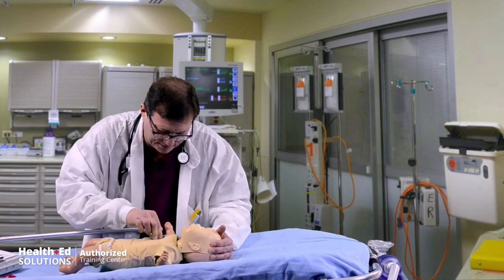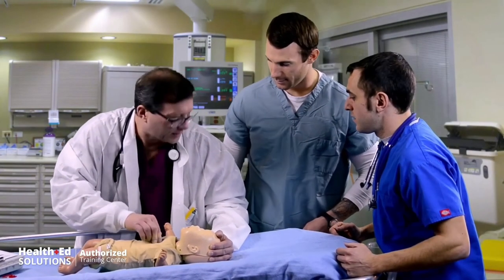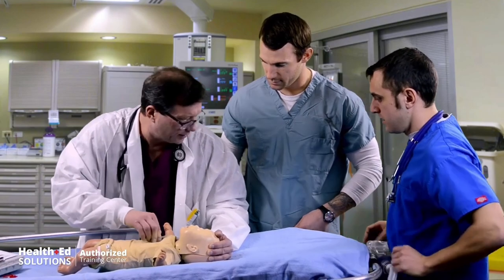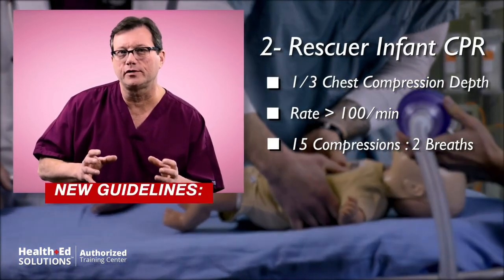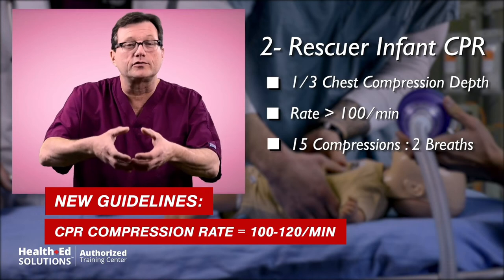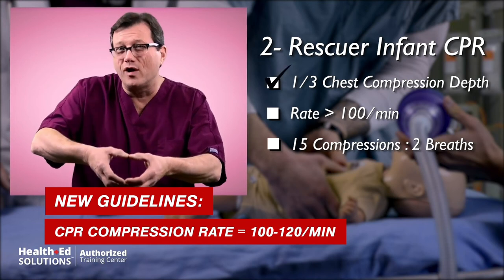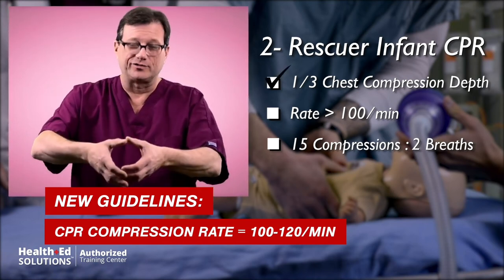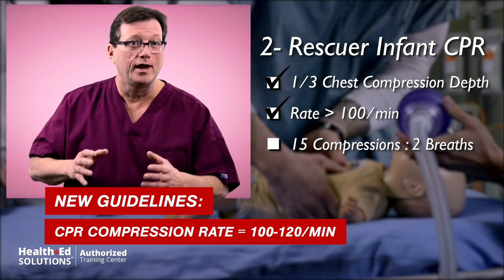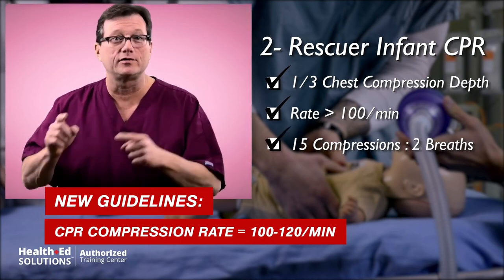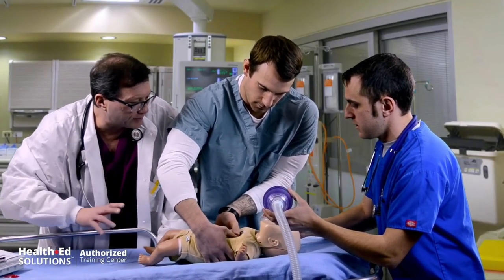The compression-to-ventilation ratio for two-rescuer infant CPR is 15 compressions to 2 breaths, watching for adequate chest rise with each breath.